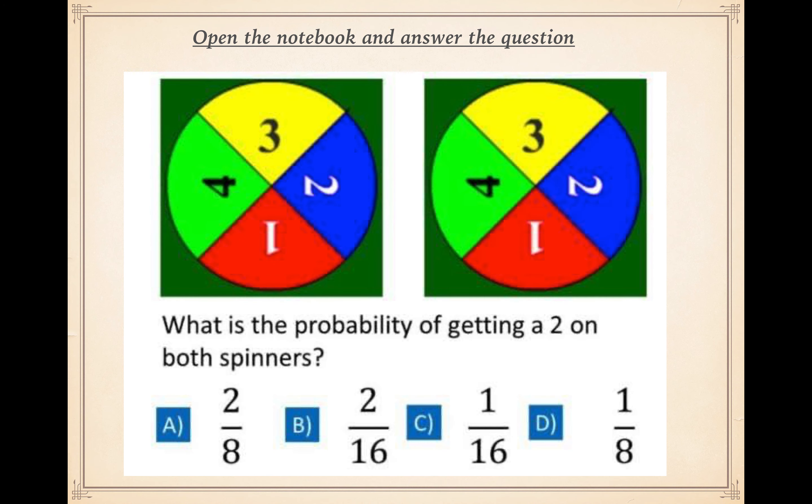This next one is a bit more tricky. Think about it — perhaps draw some diagrams and take your time. Open the notebook and answer the question: what is the probability of getting a two on both spinners? If you spin both spinners, what is the probability of both showing two? Think about all the different options — there are four possible answers. Really think about what could be the answer and why.